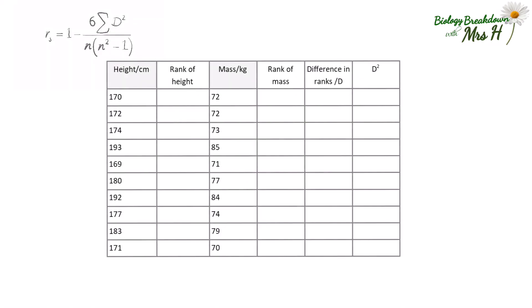To carry out the Spearman's Rank correlation, you need to add extra columns to your table. You need a column to rank the heights and a column to rank the masses. Select the biggest height and rank that as 1, the next biggest as 2, and so on and so on. Then do the same for mass.